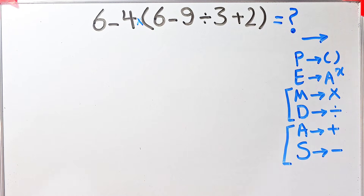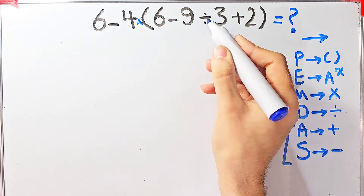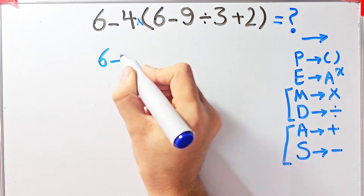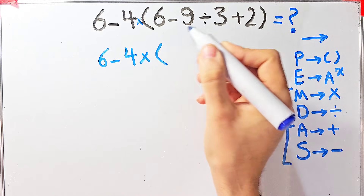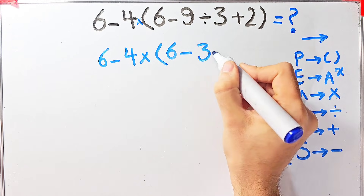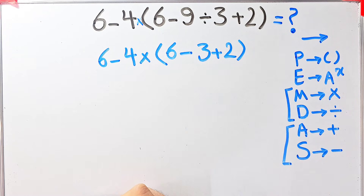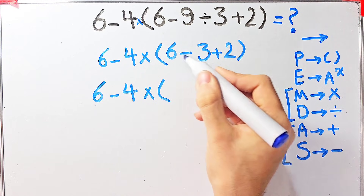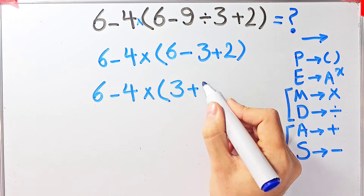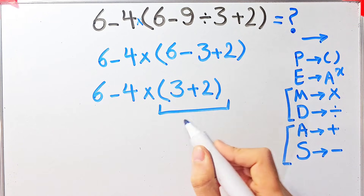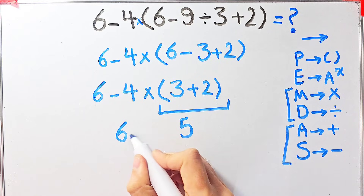In this question, first we simplify the parentheses. Inside the parentheses we have subtraction, division, and addition. First we do the division: nine divided by three equals three. So we have six minus four, then times, six minus three plus two. Next, six minus three equals three, giving us six minus four, then times, three plus two. Then three plus two equals five, so now we have six minus four, then times five.